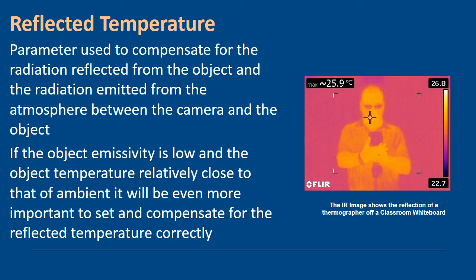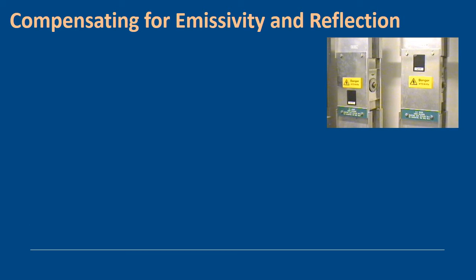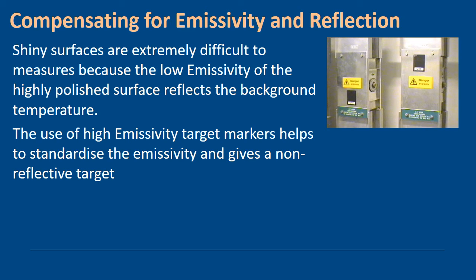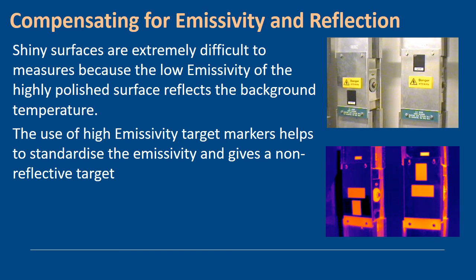So how do we compensate for emissivity and reflection? As I stated, shiny surfaces are extremely difficult to measure because of their low emissivities and the highly polished surfaces are affected significantly by background temperature. We use things like high emissivity target markers, the electrical tape I spoke about earlier, because they give us a non-reflective temperature with a known emissivity. Looking at this infrared image here, you can see that these tags are the IRISS label systems where we actually write joint temperatures, and you can see in the infrared image they're quite clear.